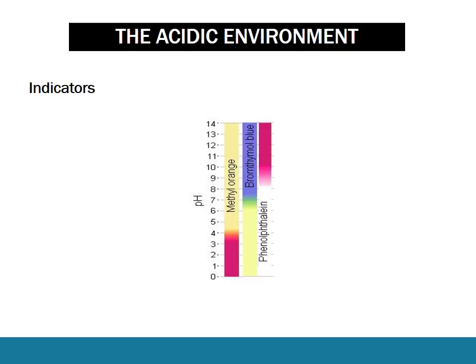You need to know the indicators and their endpoints. You need to know that methyl orange changes color at a pH of about 4, that bromothymol blue changes color at about 7, and that phenolphthalein changes color at about 8.5 or 9.